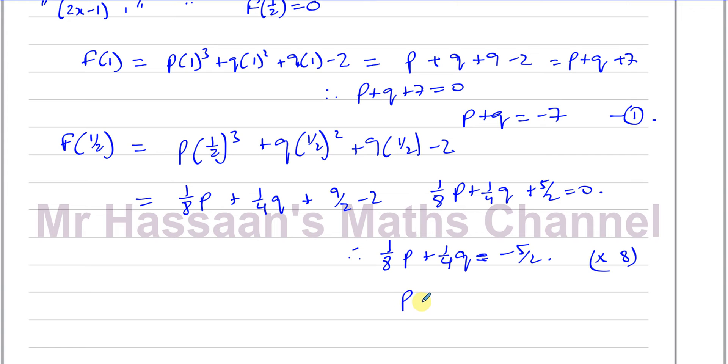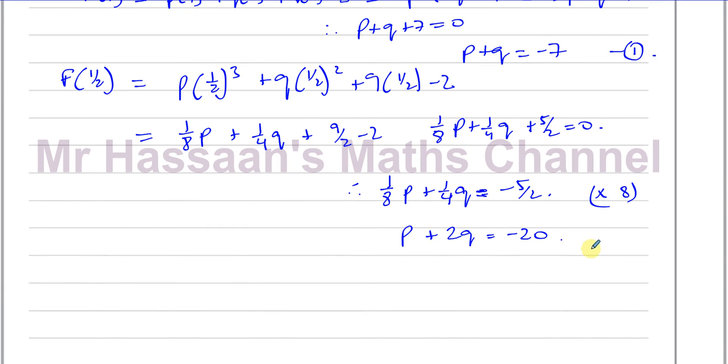So 8 times 1/8 is p, 8 times a quarter is 2, so it's 2q, and 8 times -5/2 will be -5 times 4, which is -20. So we end up now with our second equation.